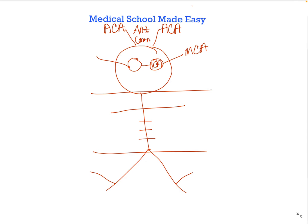We have the posterior cerebral artery that is connected by the posterior communicating artery. We have anterior, middle, and posterior cerebral arteries, and we only have two communicating arteries — anterior and posterior. It's definitely important to remember that the MCA comes off the internal carotid artery, because that is a test question they like to ask a lot.